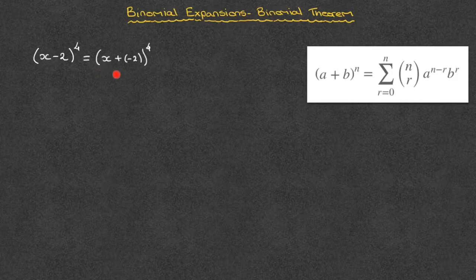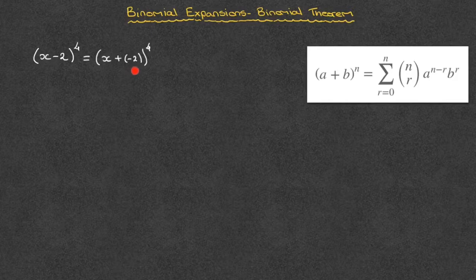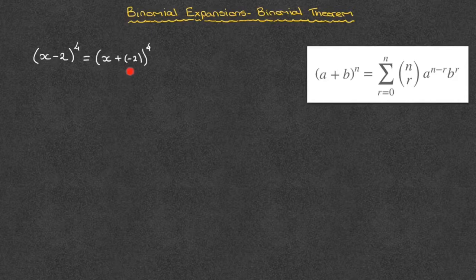Now we can compare this to the left-hand side of our binomial expansions formula. In doing so, we can see that the only difference is that we've replaced a by x, b by negative 2, and n by 4. Keeping that in mind, we can now copy the right-hand side of our formula, replacing every a by x, every b by negative 2 in parentheses, and every n by 4.